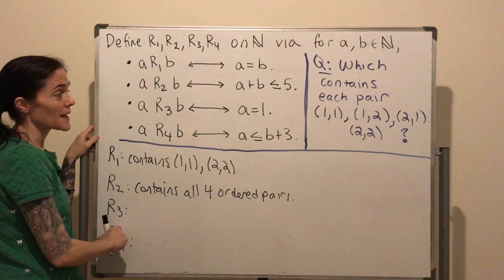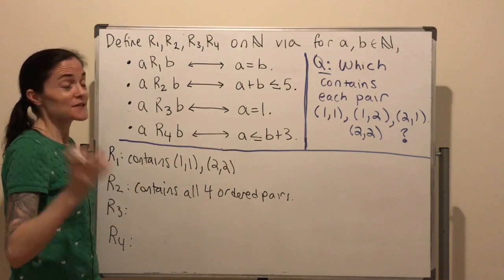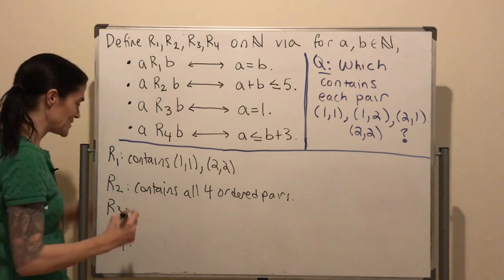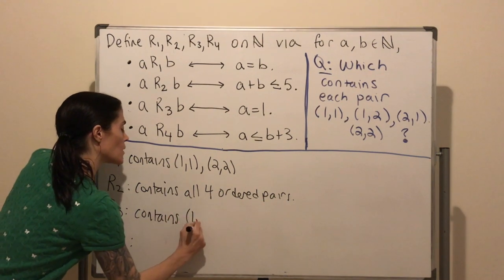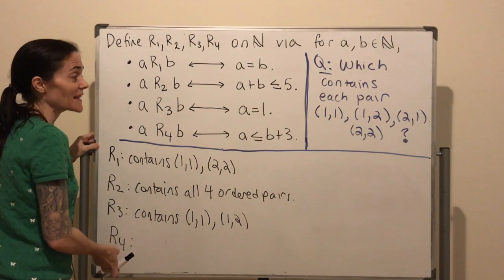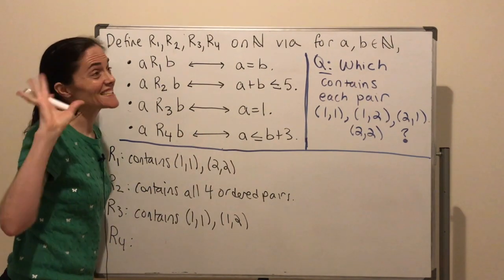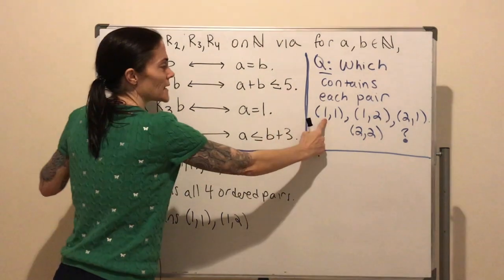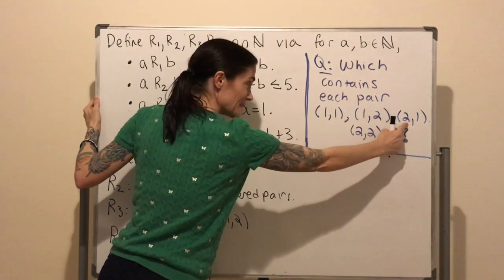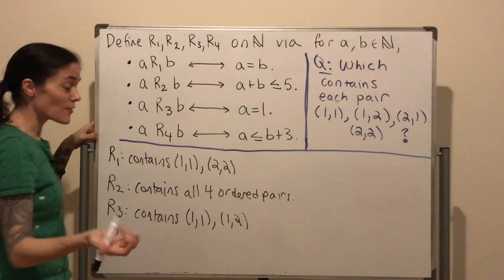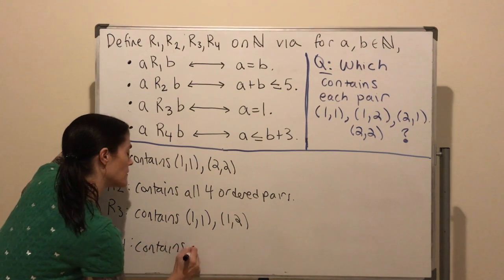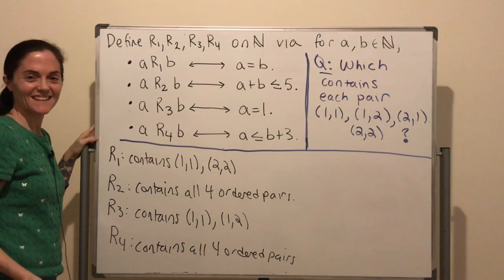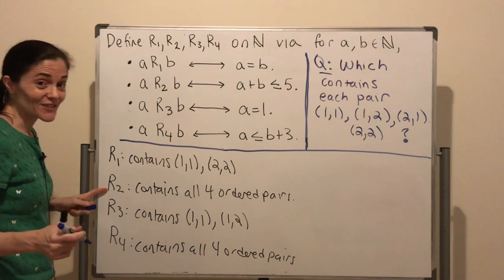For R3, it's the set of ordered pairs in ℕ×ℕ with first coordinate equal to 1, so that would only be (1,1) and (1,2). Finally, R4 contains ordered pairs where a is less than or equal to b plus 3. Checking: 1 ≤ 4, 1 ≤ 5, 2 ≤ 4, 2 ≤ 5 — so that's all four. R4 contains all four ordered pairs. The answer is R2 and R4.